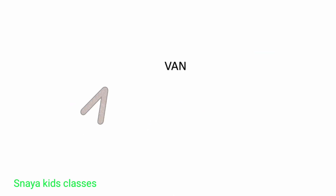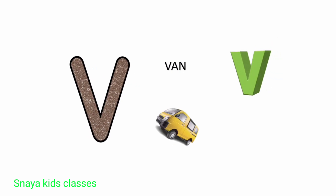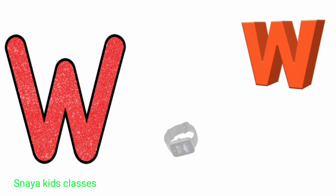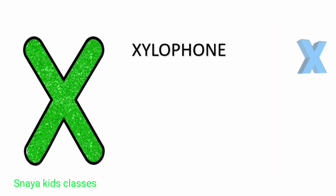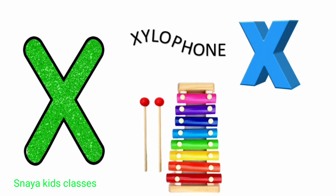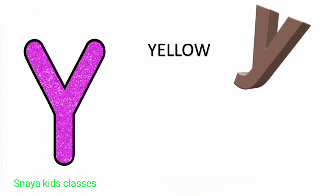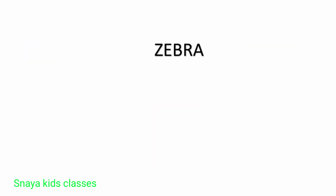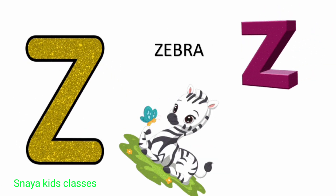V for van. W. W for watch. X for xylophone. Y. Y for yellow. Z. Z for zebra.